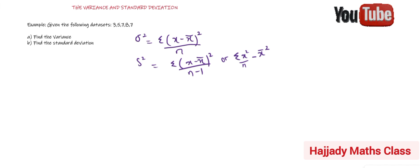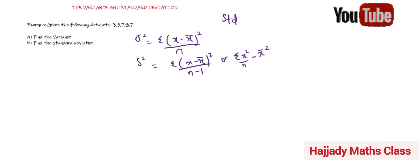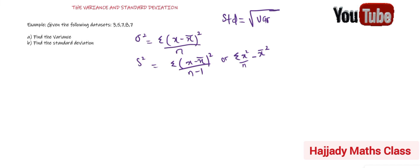Before I proceed, don't forget that when we talk about standard deviation — I'll use 'std' to represent it — the standard deviation is the same thing as the square root of the variance. So whatever you get for your variance, just find the square root. That is equivalent to the standard deviation.